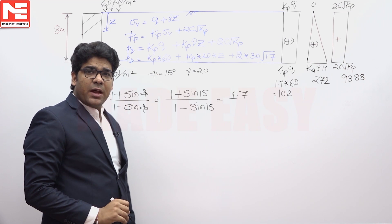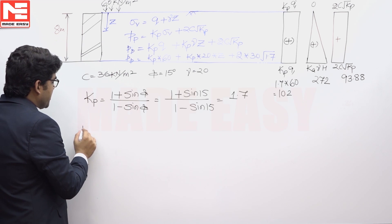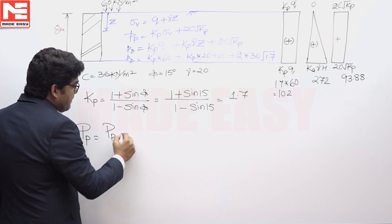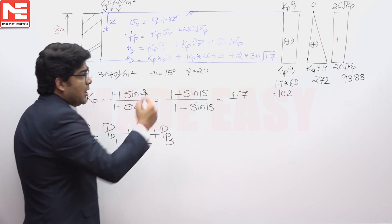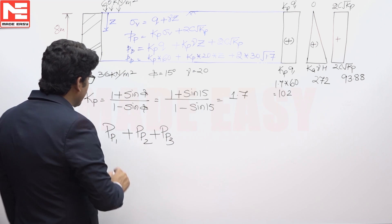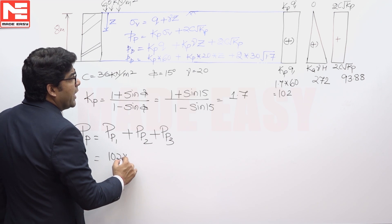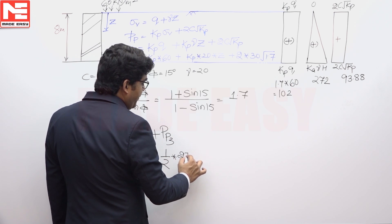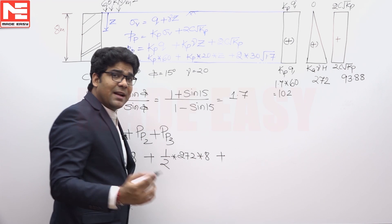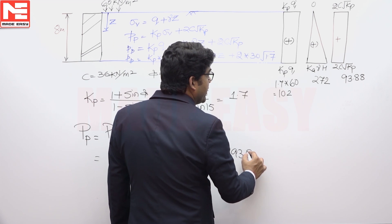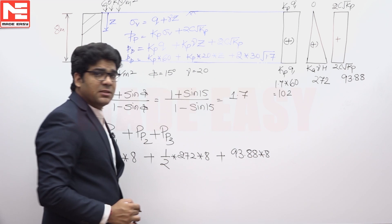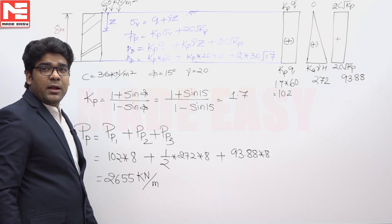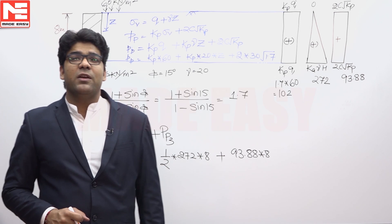So actually there are two rectangles and one triangle, so you can say that total earth pressure or capital PP will be equivalent to PP1 plus PP2 plus PP3. PP1 is rectangle, so you can say base into height and that area is equivalent to 102 into height that is equivalent to 8, plus PP2 is triangle, so that is half into base into height that is 272 into 8, and that third one is rectangle base into height that is 93.8 into 8. So that final answer will be 2655 kilo Newton per meter because we are considering that unit length of this wall. So final answer is 2655 kilo Newton per meter.